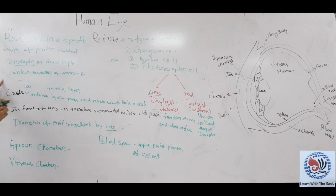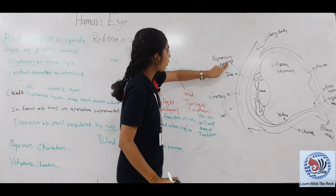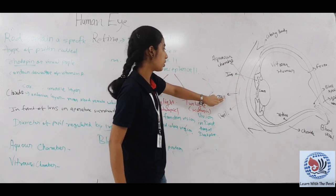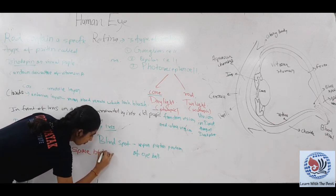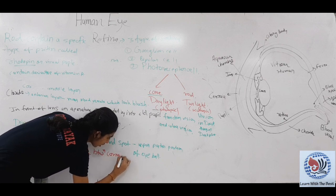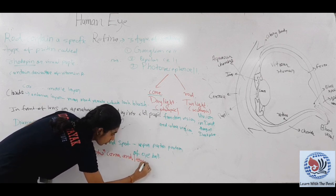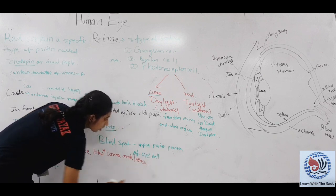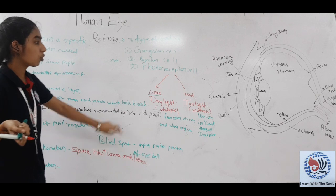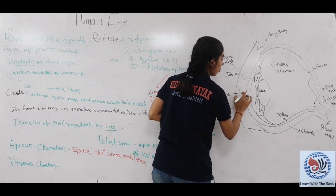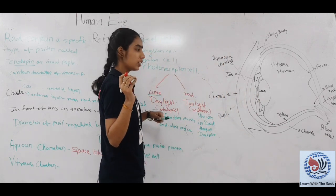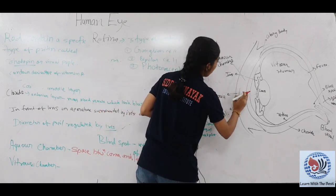Now we will see aqueous chamber and vitreous chamber. Looking at this diagram, aqueous chamber is the space between cornea and lens. In aqueous chamber, a fluid is present which we call aqueous humor.